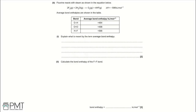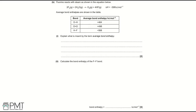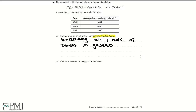Part B: fluorine reacts with steam. Part 1: explain what is meant by average bond enthalpy. Average bond enthalpy is the energy required for the breaking of one mole of bonds in gaseous molecules. First mark: breaking of one mole of bonds. Second mark: in gaseous molecules.